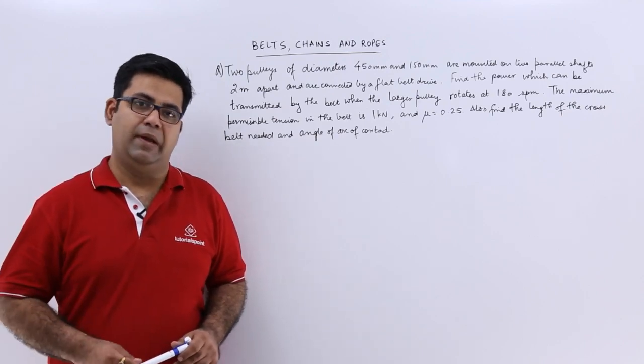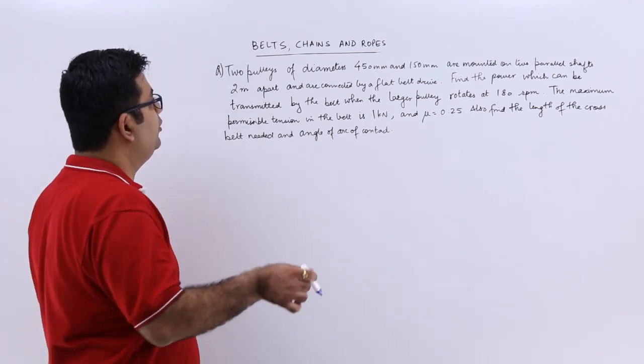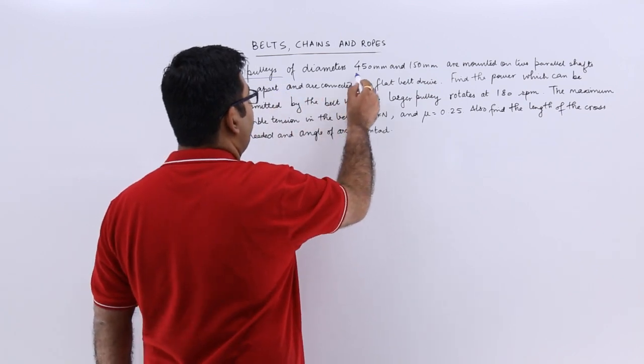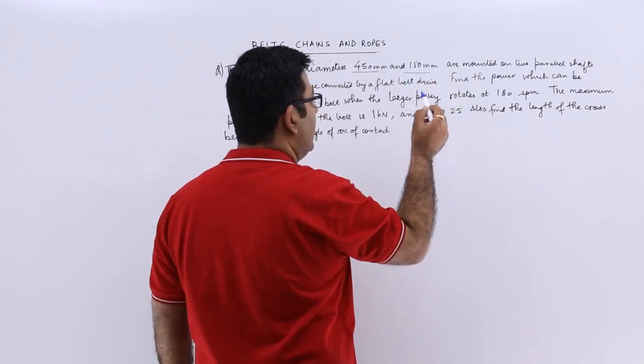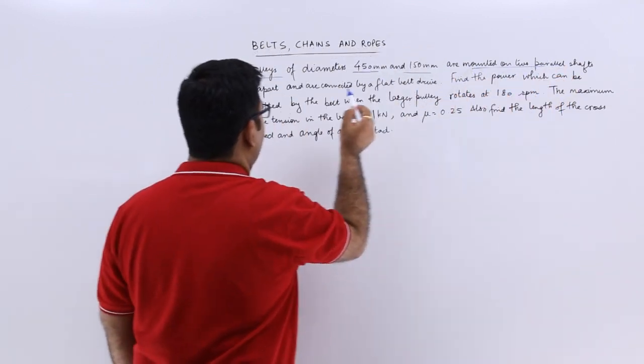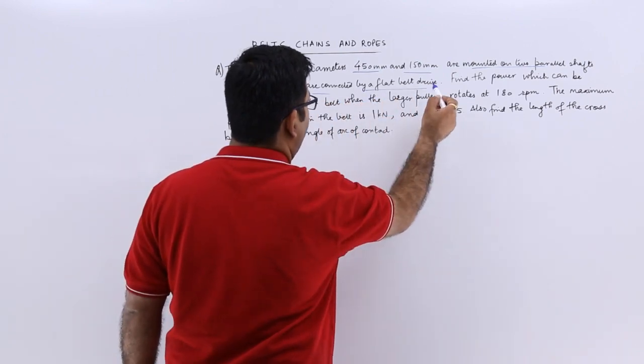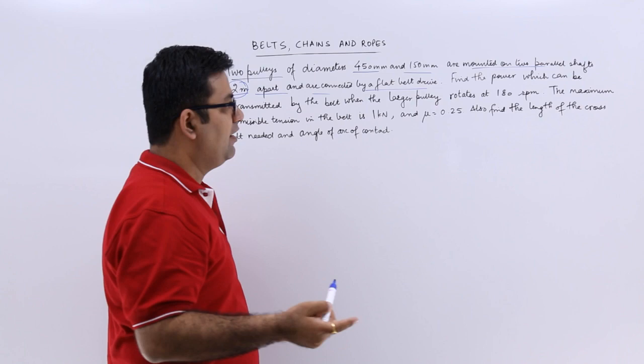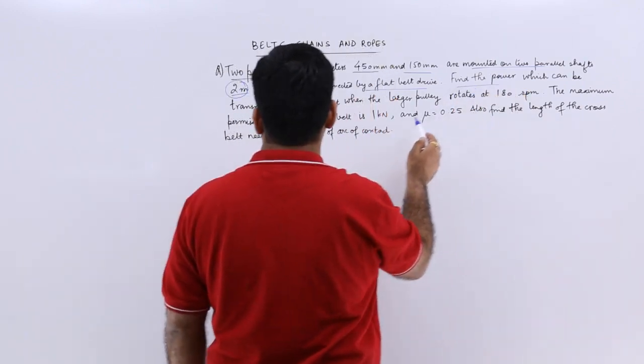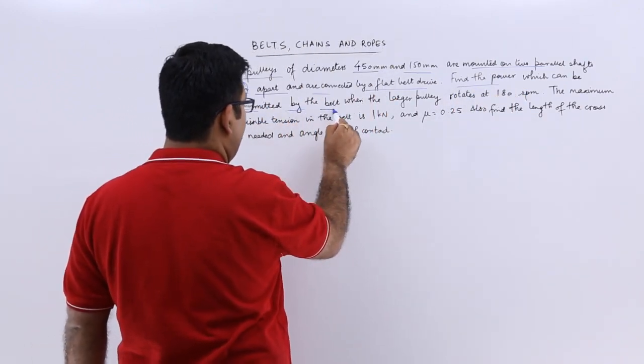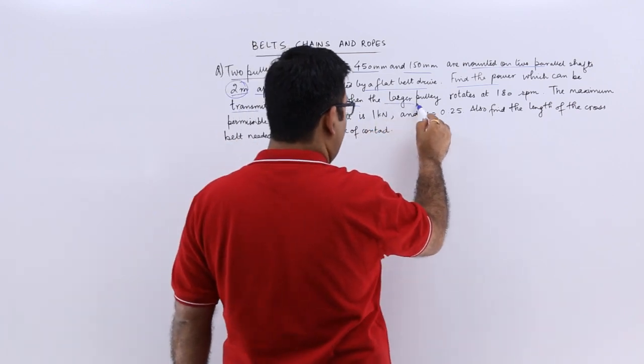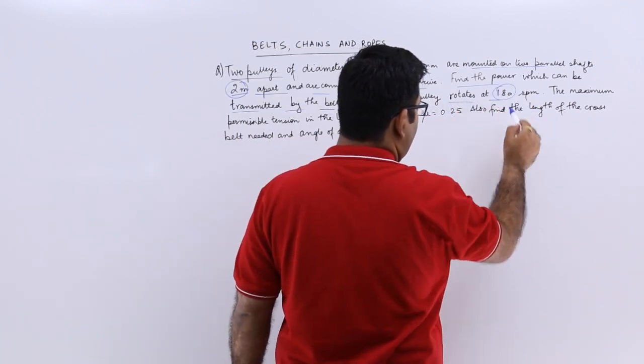Now let's look at a question on belts. The question says two pulleys of diameters 450 mm and 150 mm are mounted on two parallel shafts 2 meters apart and are connected by a flat belt drive. Find the power which can be transmitted by the belt when the larger pulley rotates at 180 rpm.